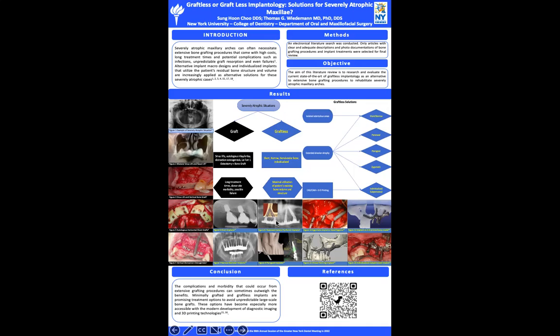Different implant designs can also adapt to non-alveolar anatomical bone. As shown in figures eight and nine, implants can engage the residual dense cortical bone in the piriform and paranasal regions. When there is little to no bone in both the posterior and even the paranasal areas, four zygomatic implants, also known as quad zygoma, can be placed to completely restore the maxillary arch, as shown in figure ten.